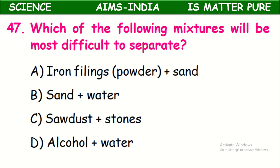Which of the following mixtures will be most difficult to separate? Iron filings and sand can be separated easily by magnet. Sand and water can be separated easily by filtration. Sawdust and stones can be separated by sieving. Alcohol and water are miscible liquids — they cannot be separated by a separating funnel or simple filtration. Fractional distillation is compulsorily needed, which requires specially designed equipment. So separation of alcohol from water is the most difficult among these.